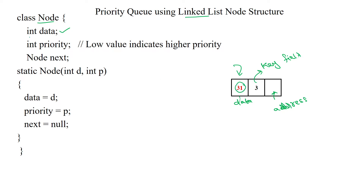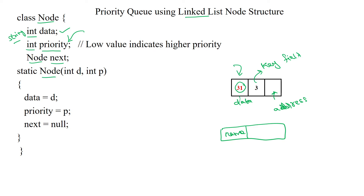Here I am using the integer data type for the data field. If you want to add a name as a data field, you can use the string data type. The data type is based on the given requirement. The priority key is always represented by an integer number, so we use the integer data type. The next field denotes the node, so we use node as the type. For each node we assign data as an integer and priority as 'p'. Initially we are creating the node with null. This is the structure to create the node for a priority queue based on a singly linked list.